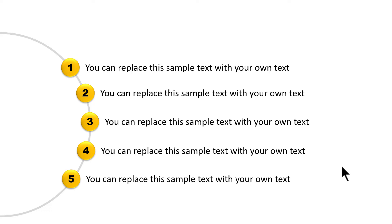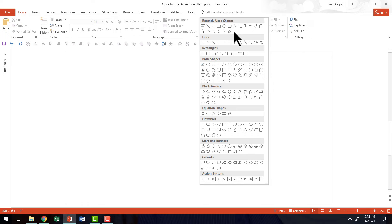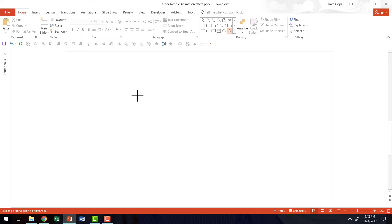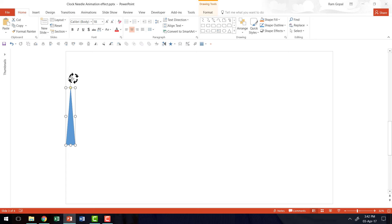The first thing we are going to do is to create the Clock Needle. So I'm going to go to the Auto Shapes menu. I'm going to use a simple Isosceles Triangle to create my Needle. So I'm going to go to Basic Shapes, pick up this Isosceles Triangle and draw the Needle. Now if I place it here and rotate this, you can see how the rotation happens.